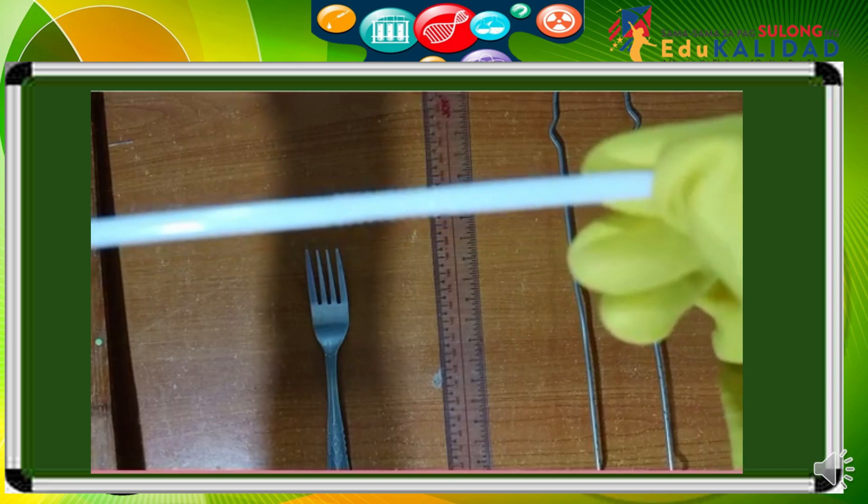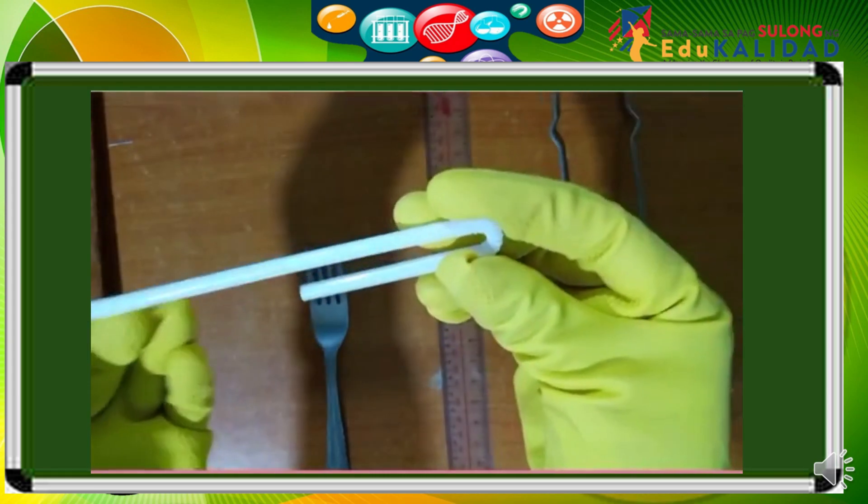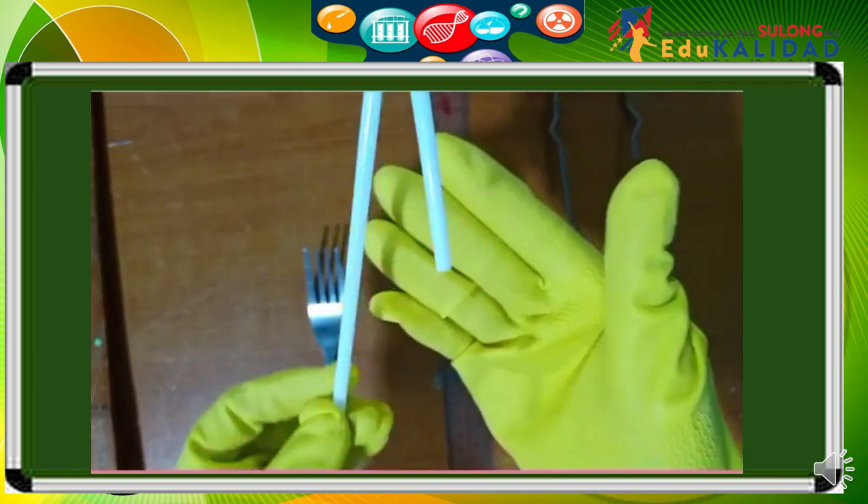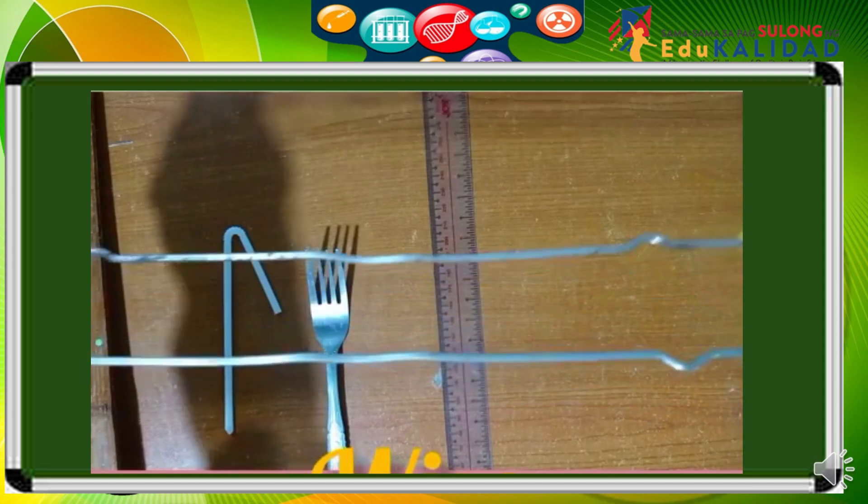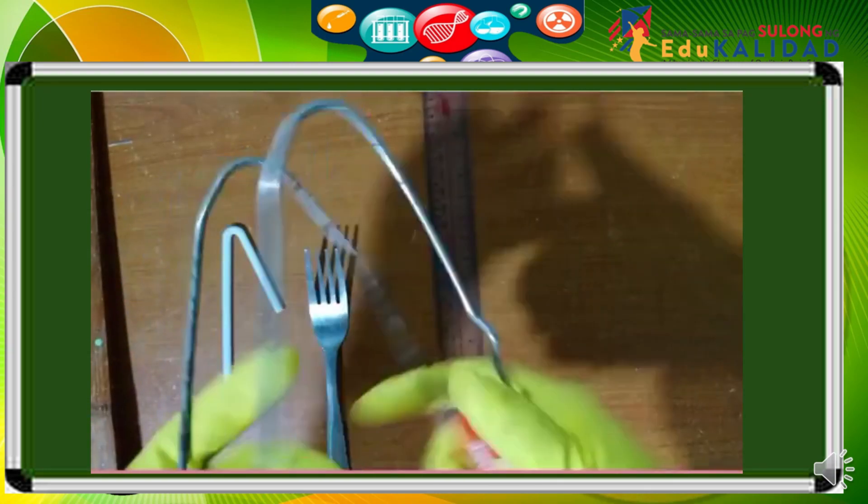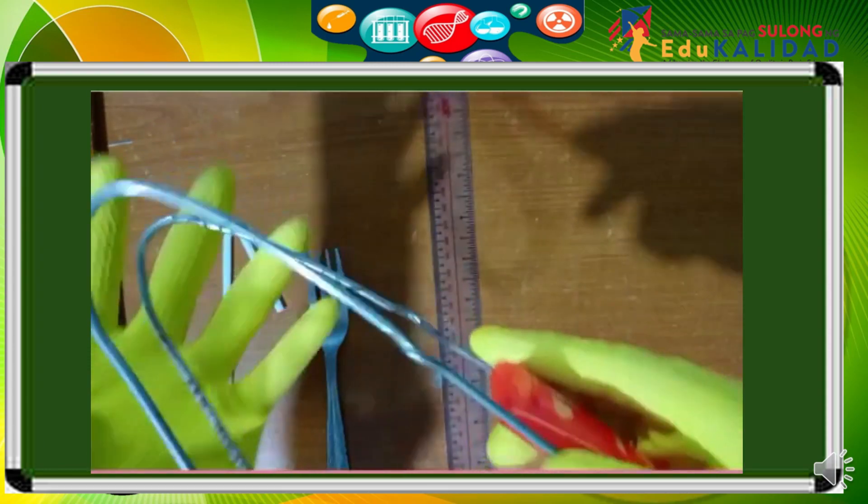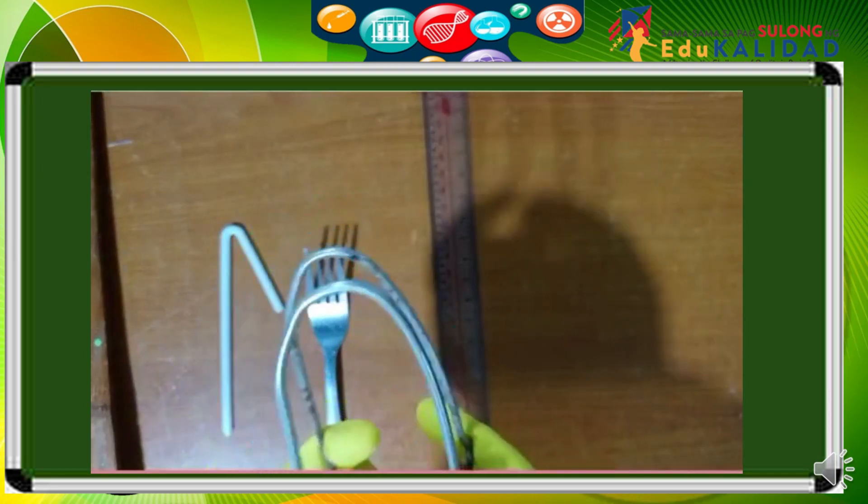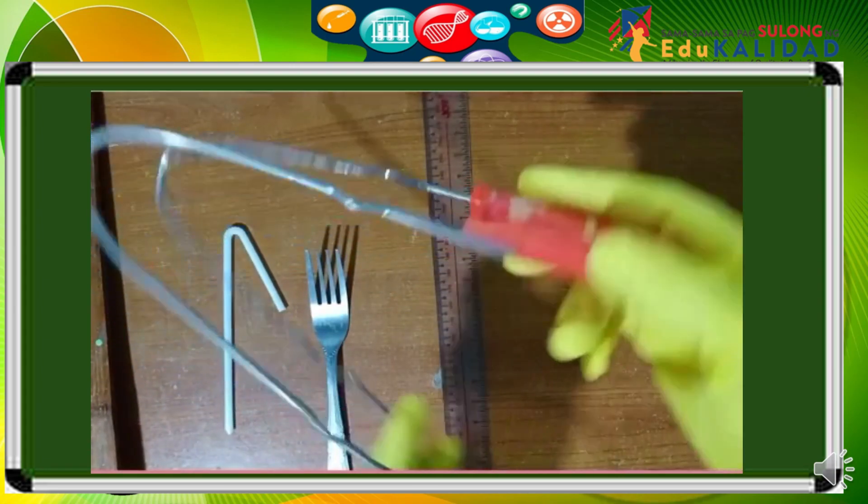Next is this wire. Let's apply force in this wire. When we applied force in this wire from straight it turned into a curved form. When we applied force this wire changed its size and shape and its physical appearance.